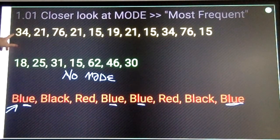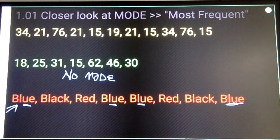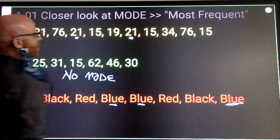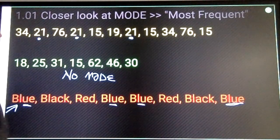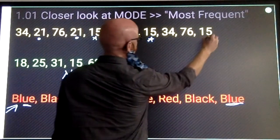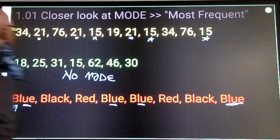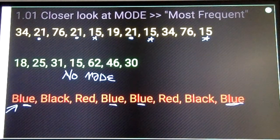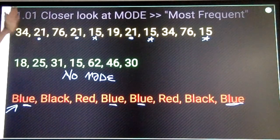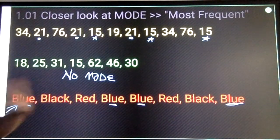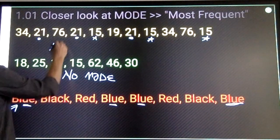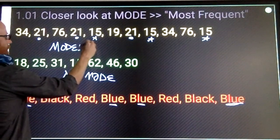Alluded to that in this top set here. 21 shows up three times. 15 shows up three times. 34 shows up twice. 76 shows up twice. Everything else shows up just once. But there are two numbers that are tied for being most frequent. So in this case, you would identify both of them as modes.